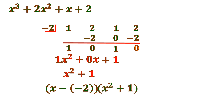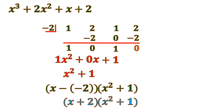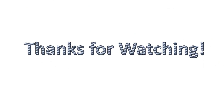From the synthetic division with r=−2, the quotient coefficients are 1, 0, 1, meaning x² + 0x + 1 = x² + 1. So the factored form is (x − (−2))(x² + 1) = (x + 2)(x² + 1). This is the factored form of x³ + 2x² + x + 2. Thanks for watching — please subscribe and write the math topics you want to learn in the comments.